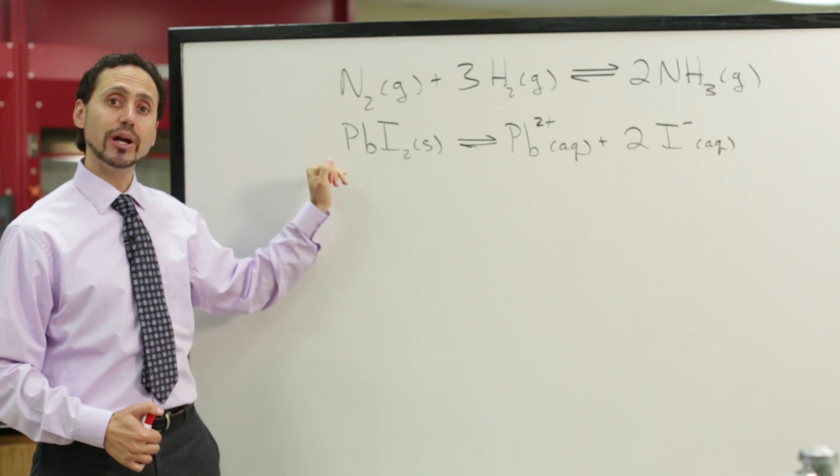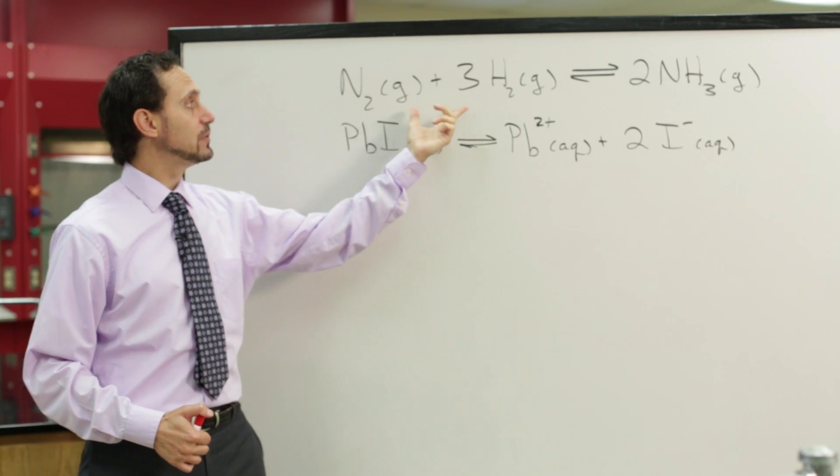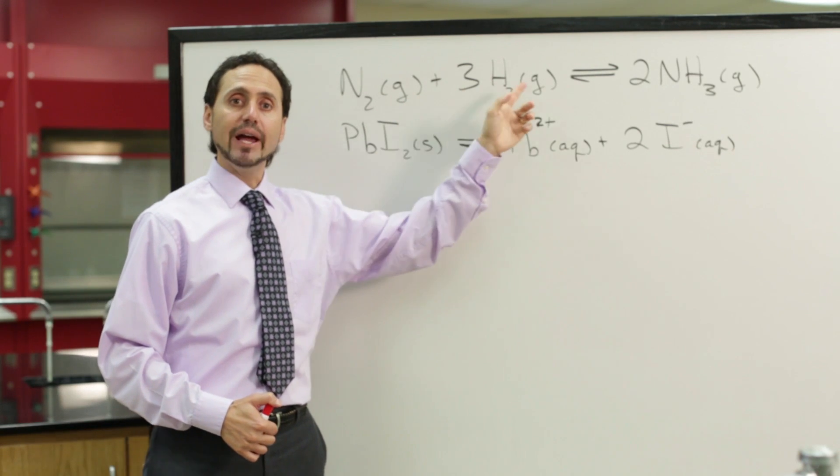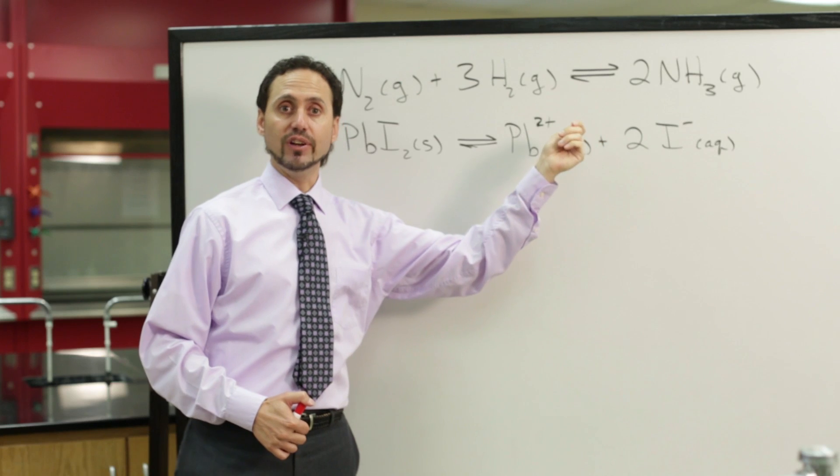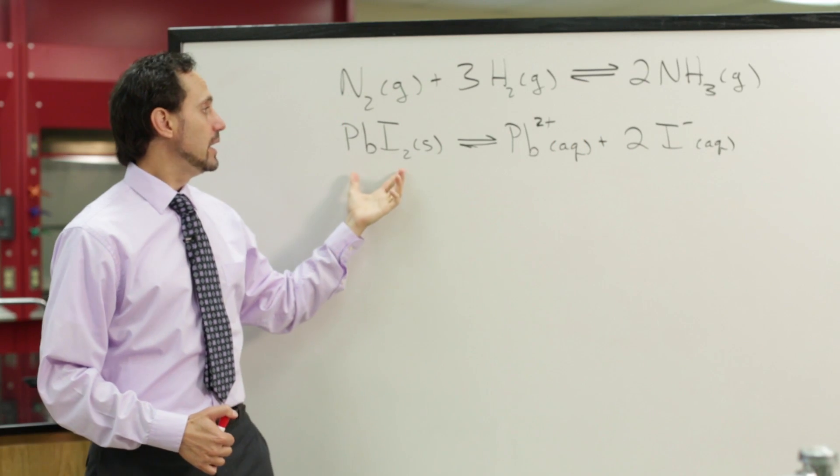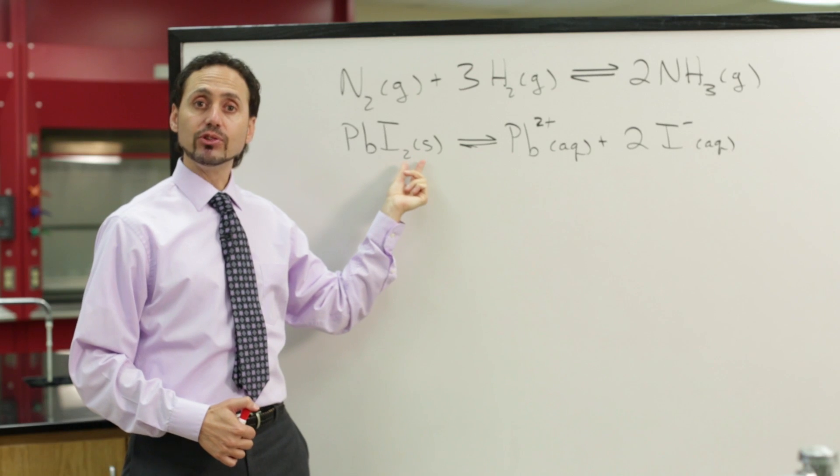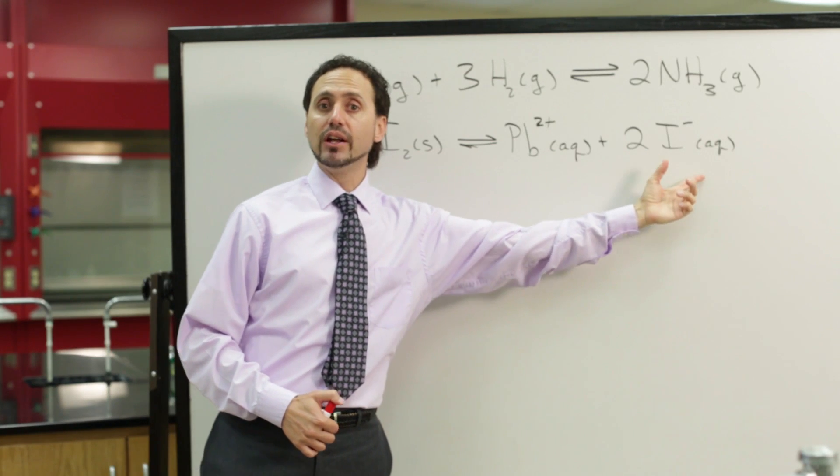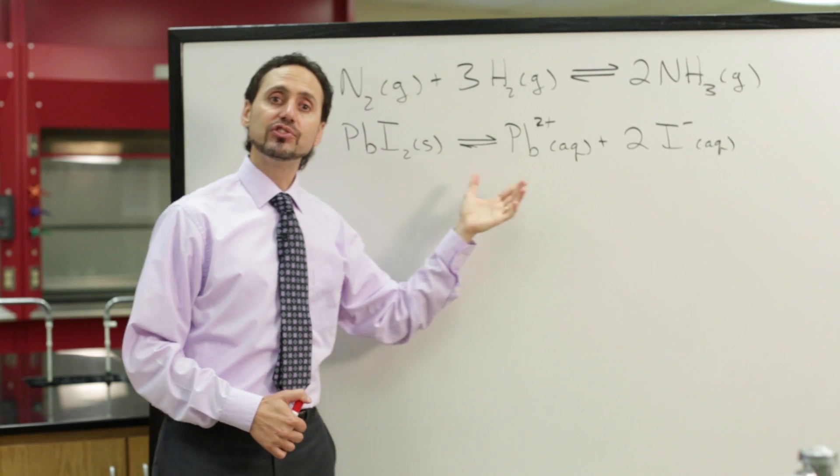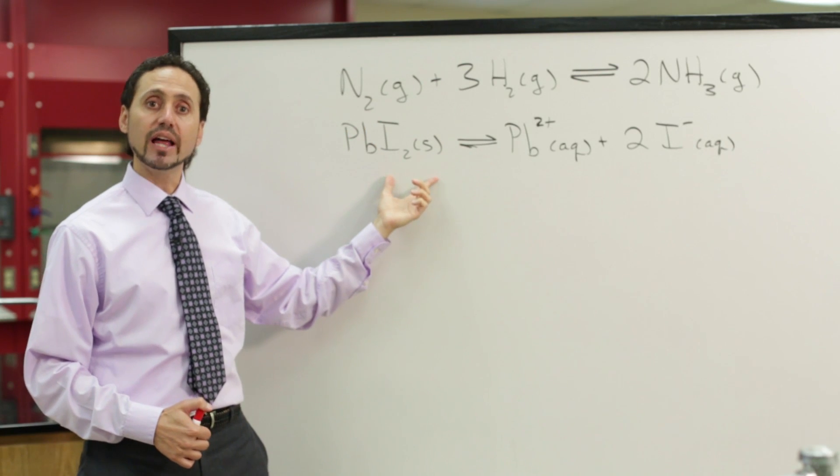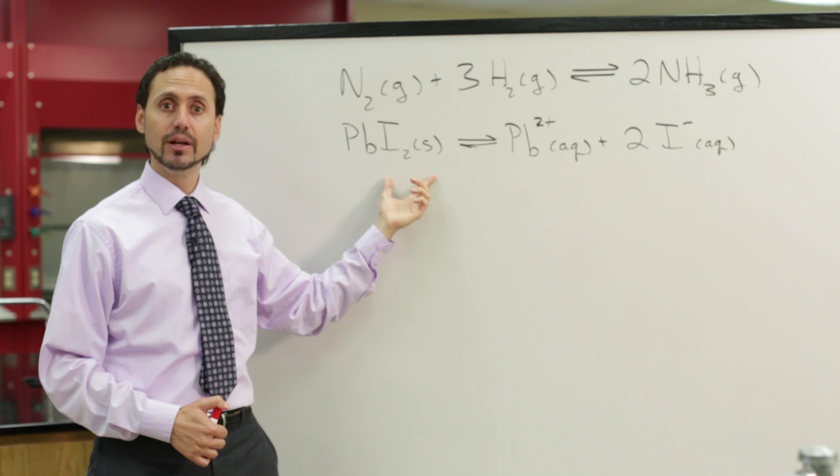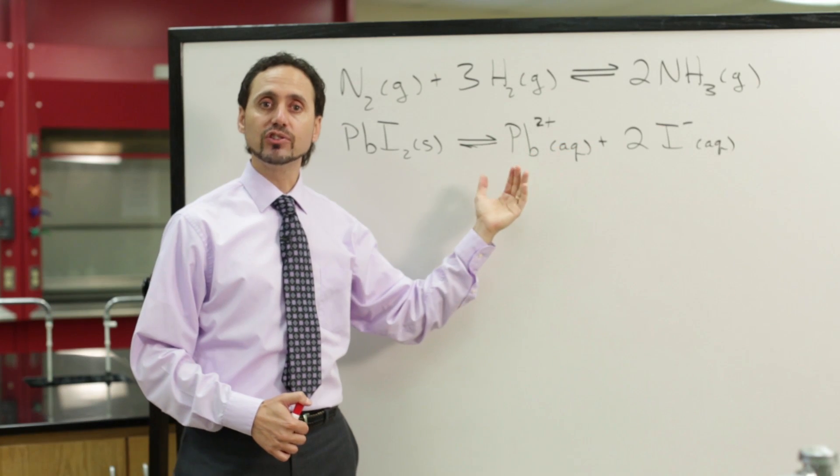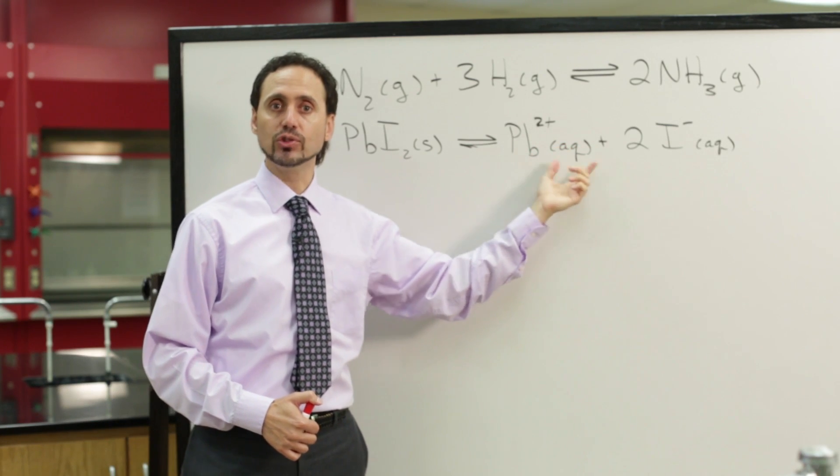If you compare these two situations, you'll notice that in the first equation, all of the reactants and products are in the gas phase. However, in the second equilibrium, we have our reactant in the solid phase and our products are in the aqueous phase. The second equilibrium is what we call a heterogeneous equilibrium because the reactants and products are in different physical states or different phases.